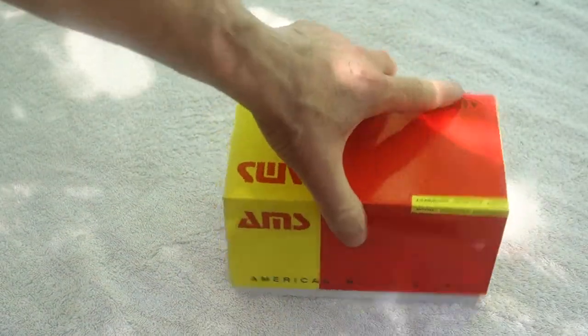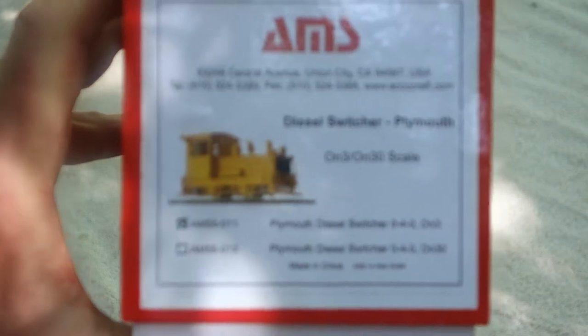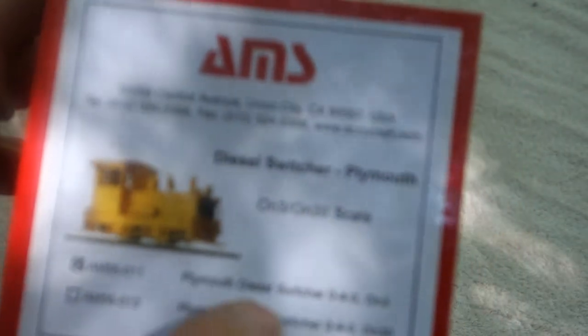So there we are, there's the box. And this is the label there. It says it's a diesel switcher Plymouth ON3 ON30 scale, but this is the model AM 55-011, the Plymouth diesel switcher 040 ON3.